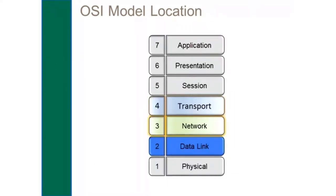As far as the Dynamic Host Configuration Protocol is concerned, it helps us at layer three by allowing us to assign IP addresses to our machines without having to worry about misconfigurations or duplicate addresses from manual entry.